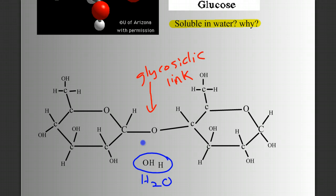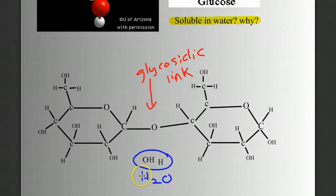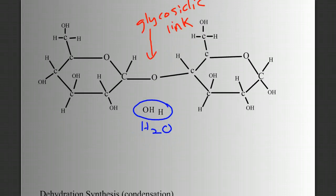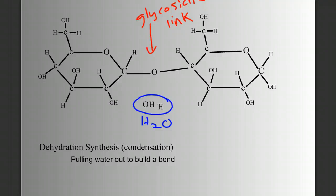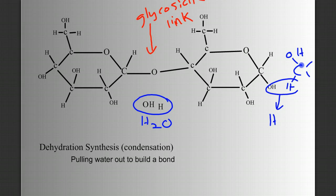What I did here was pull out water to build a bond. Stop the video and write that down if you know the name for this process. I pulled water out — I dehydrated — to build a bond, to synthesize. We call this process dehydration synthesis, sometimes referred to as a condensation reaction. If I have another sugar, I can do this same process again and again, creating a polymer — a strand of many sugars together: a polysaccharide.